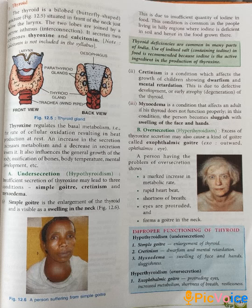Another gland we have is the thyroid gland. This is a bilobed structure located in front of the neck, just below the larynx. Look at image 12.5 — in the front view it is a butterfly-shaped structure. The two lobes of the thyroid are attached to each other by a narrow isthmus, which is the interconnection between them.